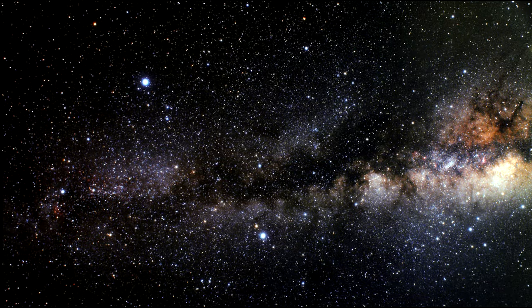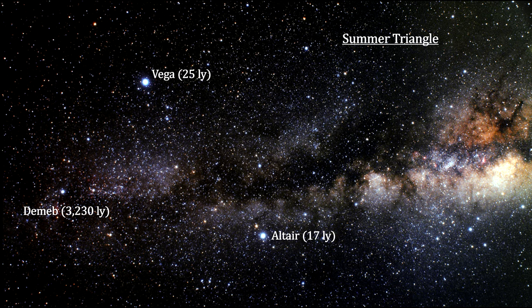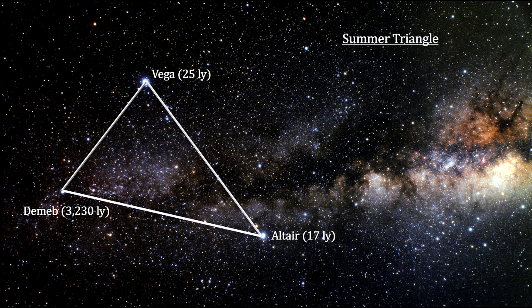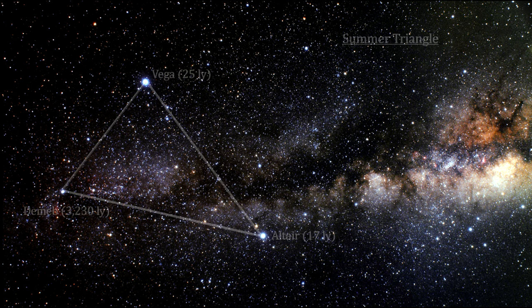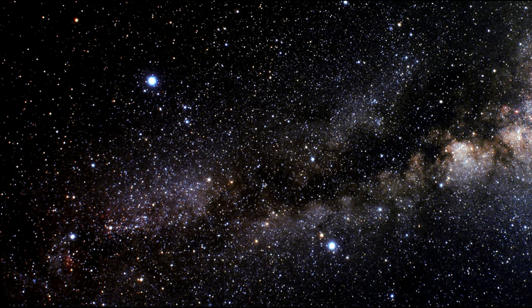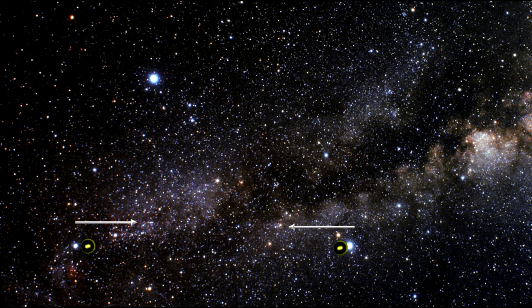In the most extreme case, suppose we had two photons traveling towards each other. Here's the Northern Hemisphere's summer triangle with Vega, Altair, and Deneb. Let's say one photon is traveling from Deneb to Altair and the other one is traveling from Altair to Deneb.